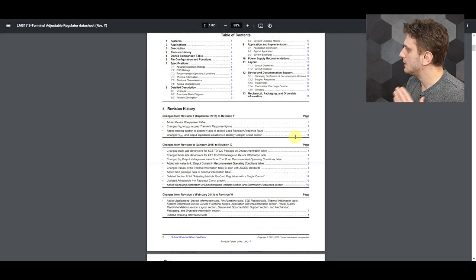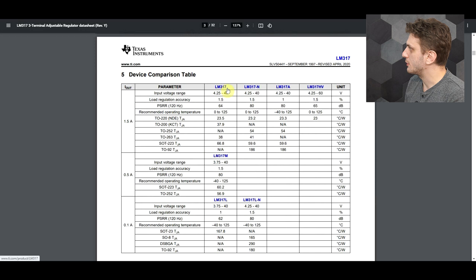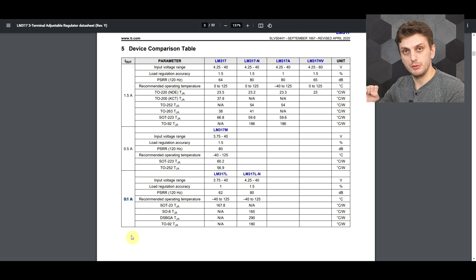Regarding the current limit, this IC comes in three main versions. You've got your LM317 in the N, A, and HV versions with a maximum current of 1.5 amps. Then you have the M version at 500 milliamps, and finally the L and LN versions at 100 milliamps. I'll be going with the L version with a 100 milliamp current limit since I don't really expect to be running high currents with my high voltages.